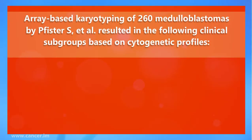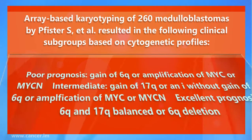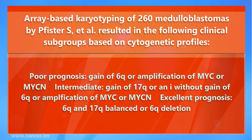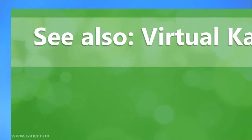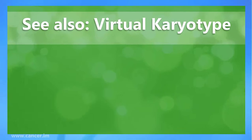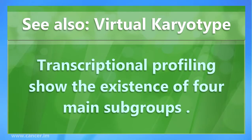Array-based karyotyping of 260 medulloblastomas resulted in the following clinical subgroups based on cytogenetic profiles: poor prognosis — gain of 6q or amplification of MYC; intermediate — gain of 17q or isochromosome 17q without gain of 6q or amplification of MYC.